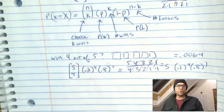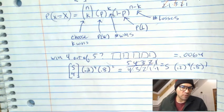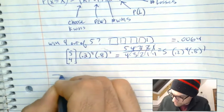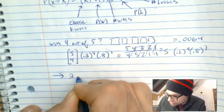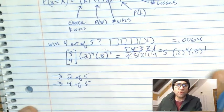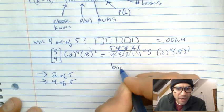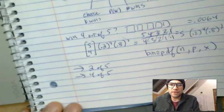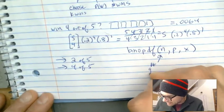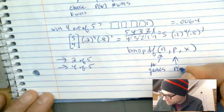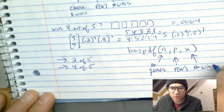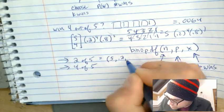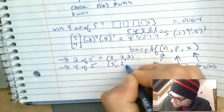Is there an easier way? Yes! You can use your calculator with binomPDF(N, P, X). N is the number of games, P is the probability of winning, and X is the number of wins you're curious about. So for exactly two wins out of five: binomPDF(5, 0.2, 2). For exactly four wins out of five: binomPDF(5, 0.2, 4).